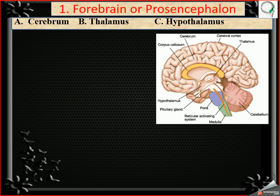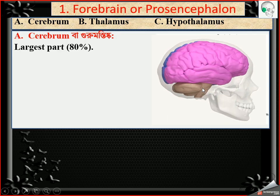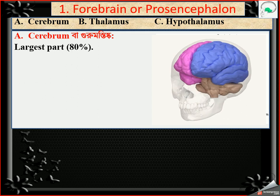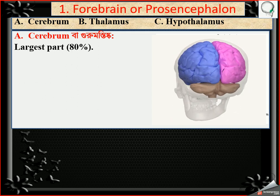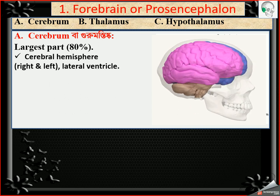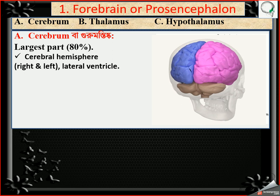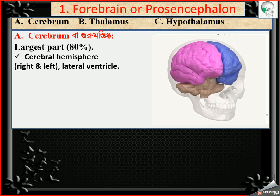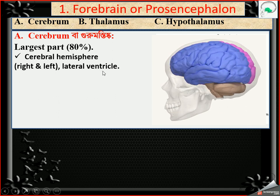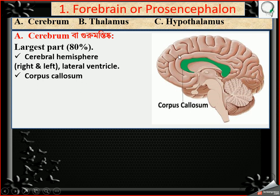The forebrain or prosencephalon is again divided into three parts: cerebrum, thalamus, and hypothalamus. The cerebrum is the largest part and occupies 80% of the brain. It is divided into two parts — right and left — called cerebral hemispheres. The cerebral hemispheres contain two cavities: the first and second ventricle, also called lateral ventricles. Both right and left cerebral hemispheres connect on the ventral side via a bent-shape structure called the corpus callosum.